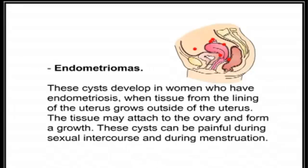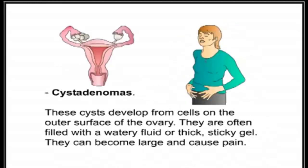Endometriosis: when tissue from the lining of the uterus grows outside of the uterus, the tissue may attach to the ovary and form a growth. These cysts can be painful during sexual intercourse and during menstruation.